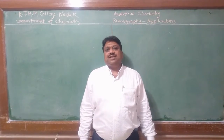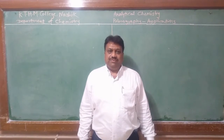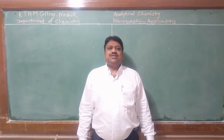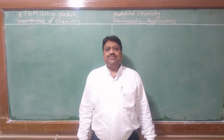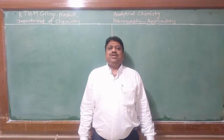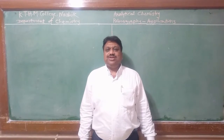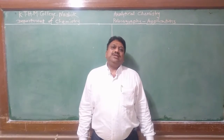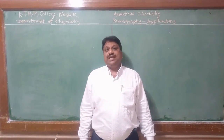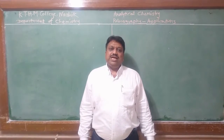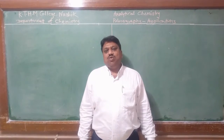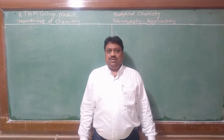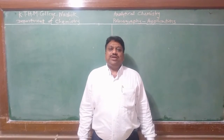In the previous lecture, we discussed factors affecting the nature of the polarographic wave. We also solved numericals based on calculation of concentration of electroactive species using diffusion current, calculation of diffusion current when concentration is known, determination of the diffusion coefficient of electroactive species, and the number of electrons involved in a redox reaction using the Ilkovic equation.